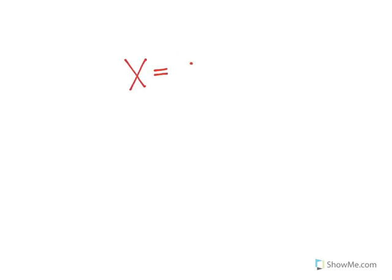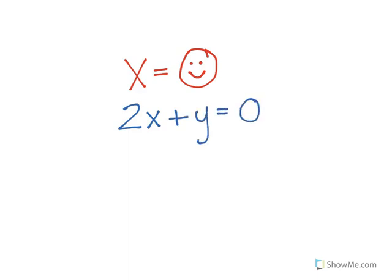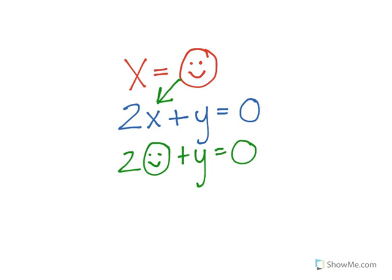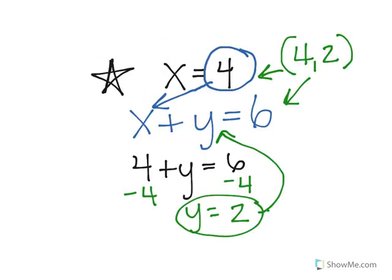That means that if I tell you x equals happy face, in the other equation, wherever there's an x, I'm going to stick a happy face. So it would be 2 times happy face plus y equals 0 — I'm substituting the x with the happy face. Instead of putting x there, I'm putting a happy face everywhere there's an x. Just like the example I just did: x equals 4, so wherever there was an x, I put a 4 to solve for y. You're substituting something in order to solve for a variable.